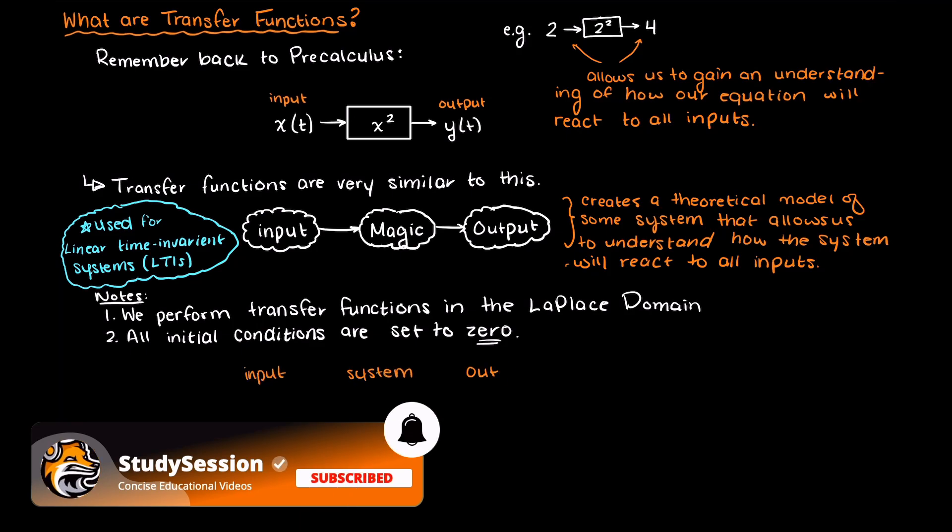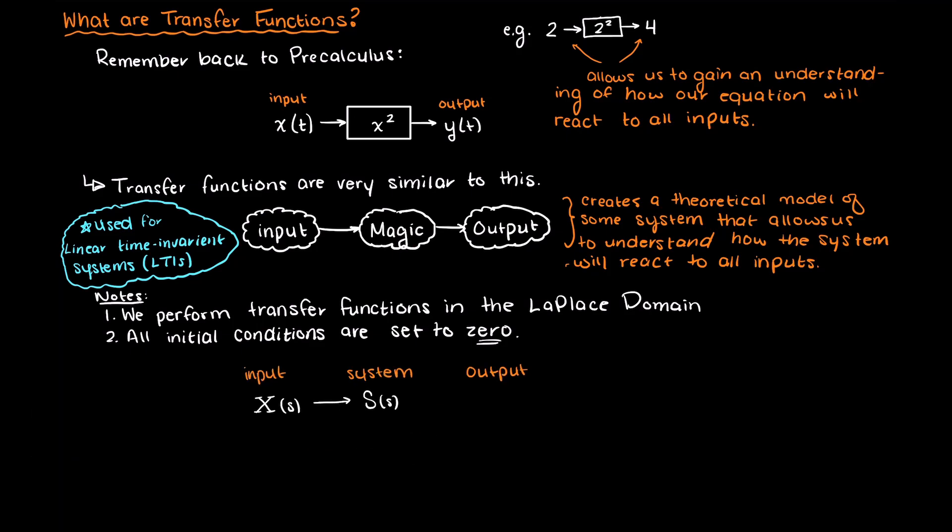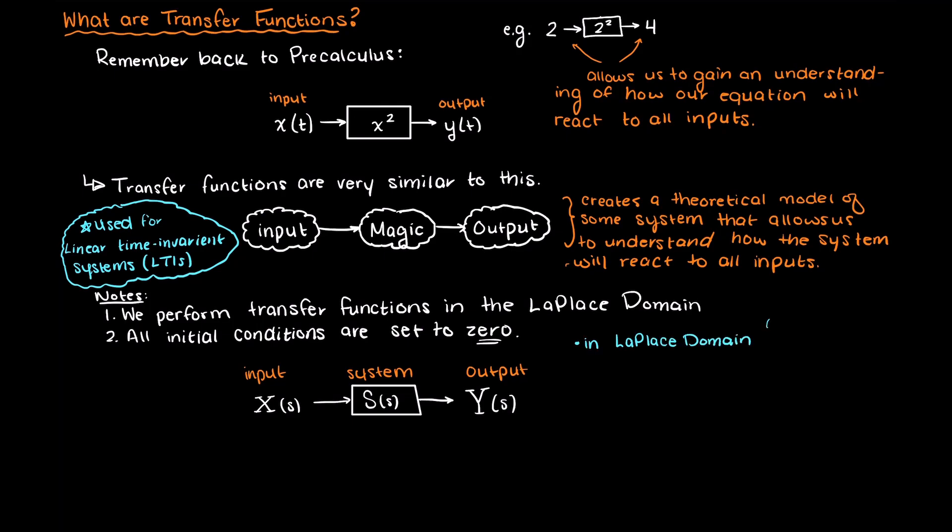So the way we represent transfer functions is like so. We have some input into our system, our transfer function of our system, and an output. Remember that we denote we are in the Laplace domain using capital variables, and that these functions are of our imagined variable s as we are not in the time domain.